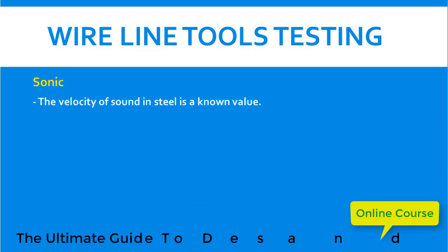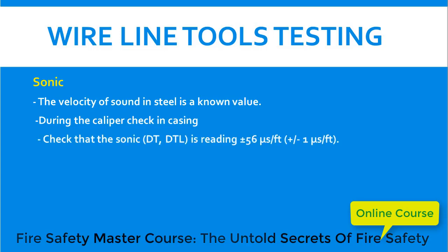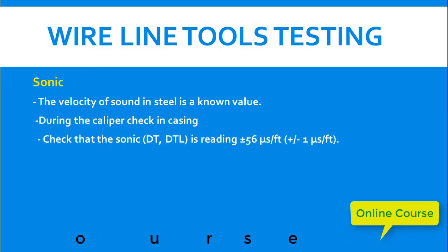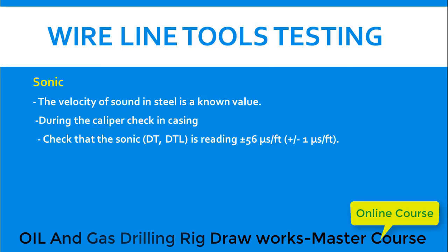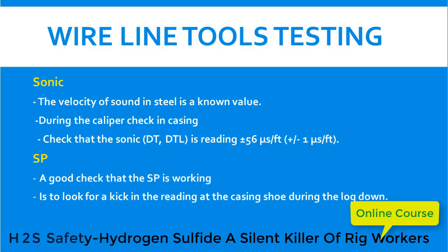For sonic tools, the velocity of sound in steel is a known value. During the caliper check in casing, verify that the sonic tool is reading plus or minus 56 microseconds per foot — this is the velocity of sound in steel. The acceptable discrepancy in values obtained from the sonic tool is plus or minus one microsecond per foot.